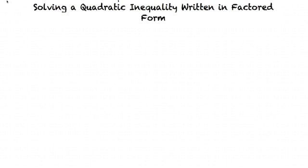This video will cover solving a quadratic inequality written in factored form. For this video, we have the quadratic inequality x minus 4 times x plus 1 is greater than 0, written in factored form. Our goal for this problem is to solve the inequality by graphing the solution on a number line.